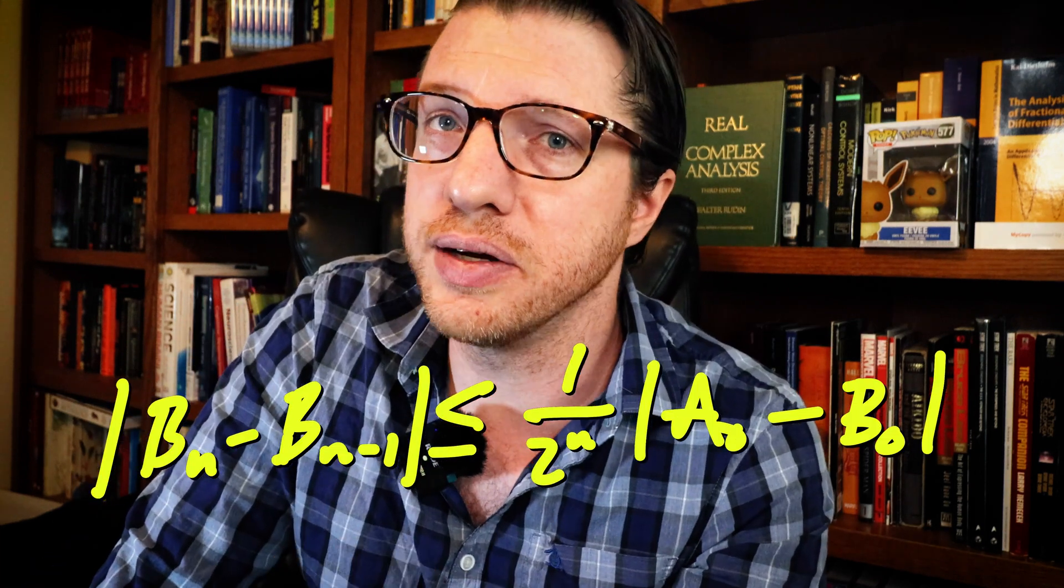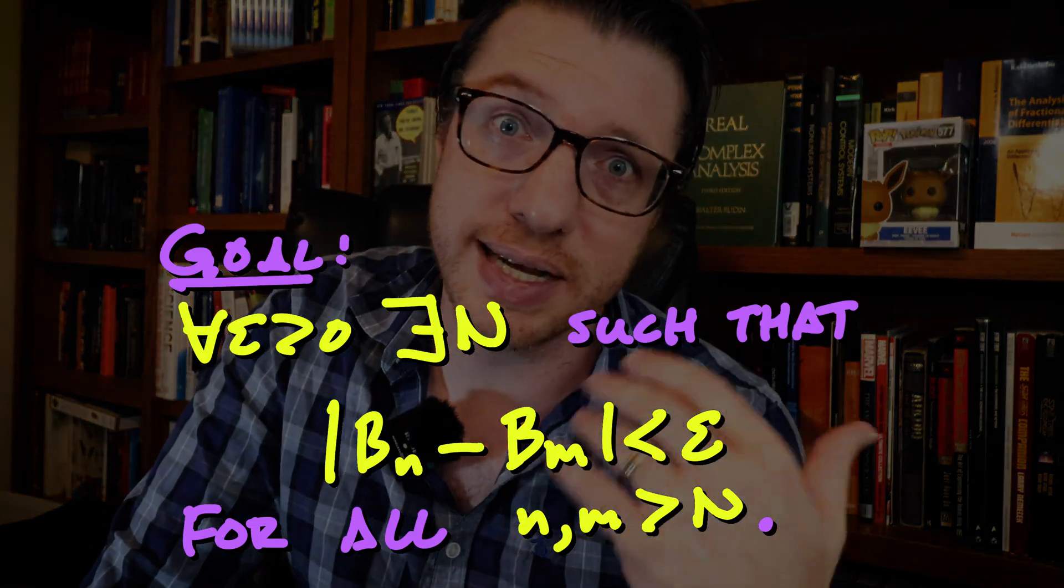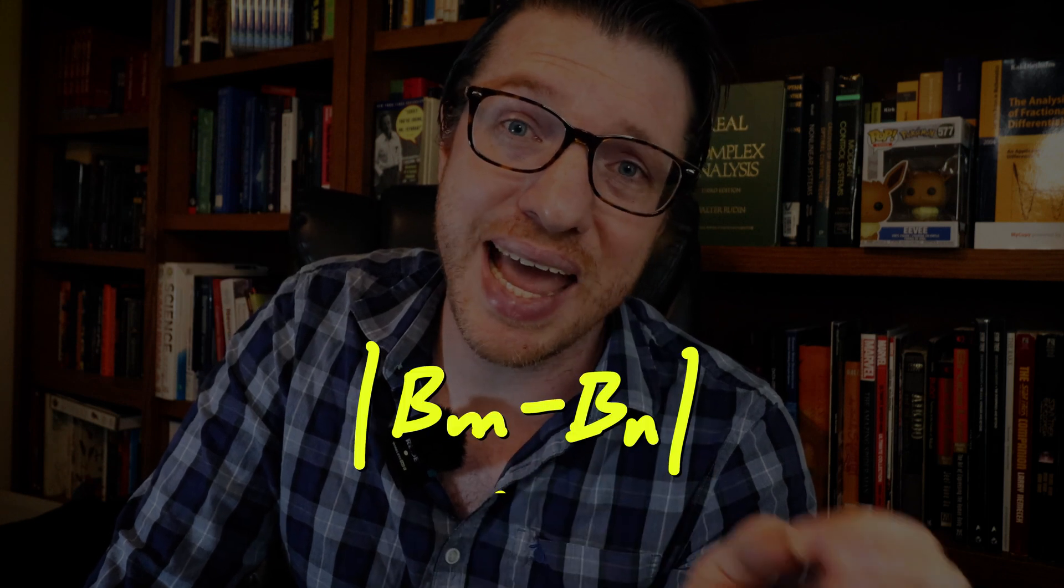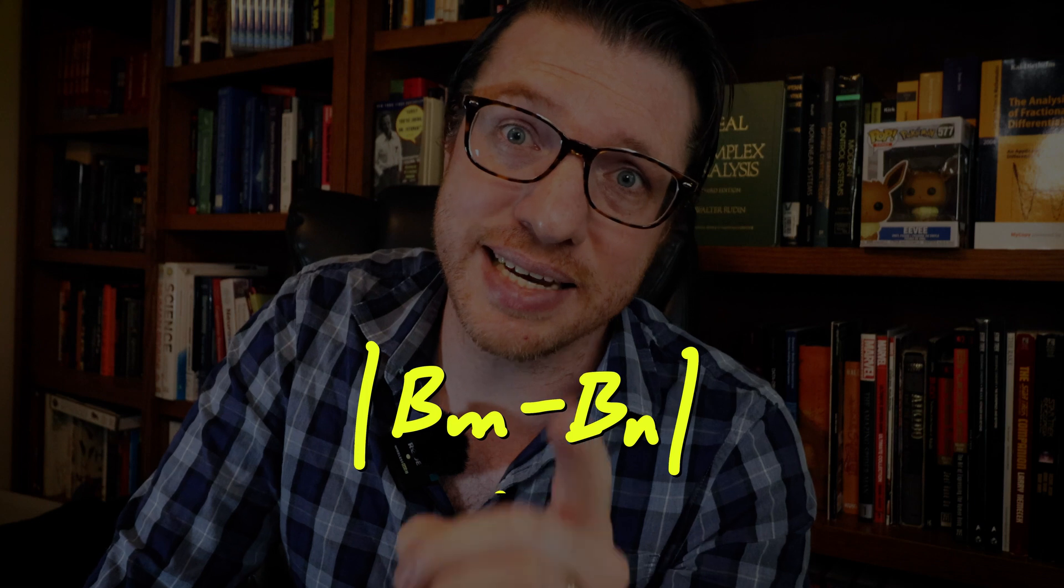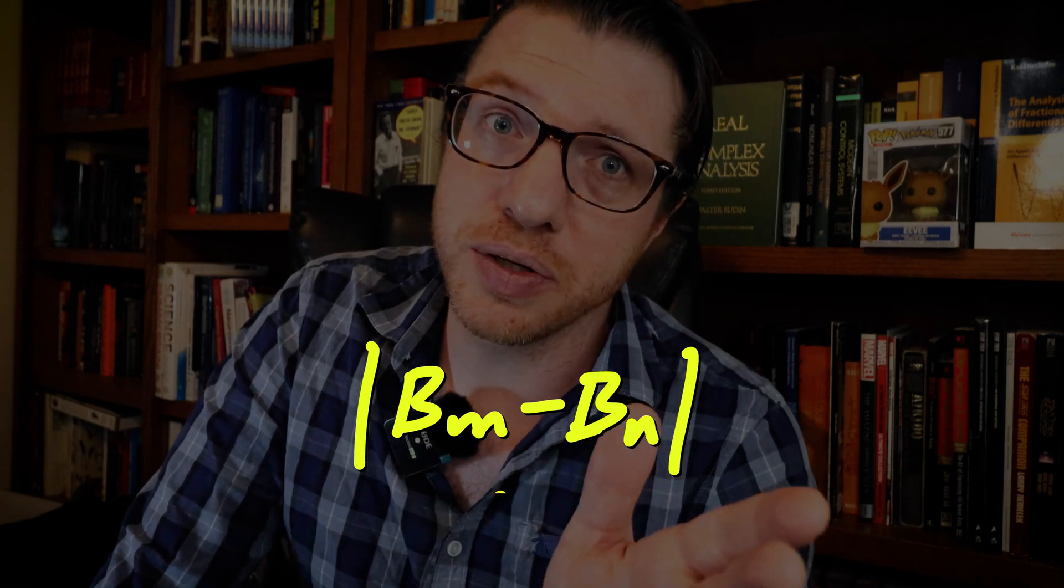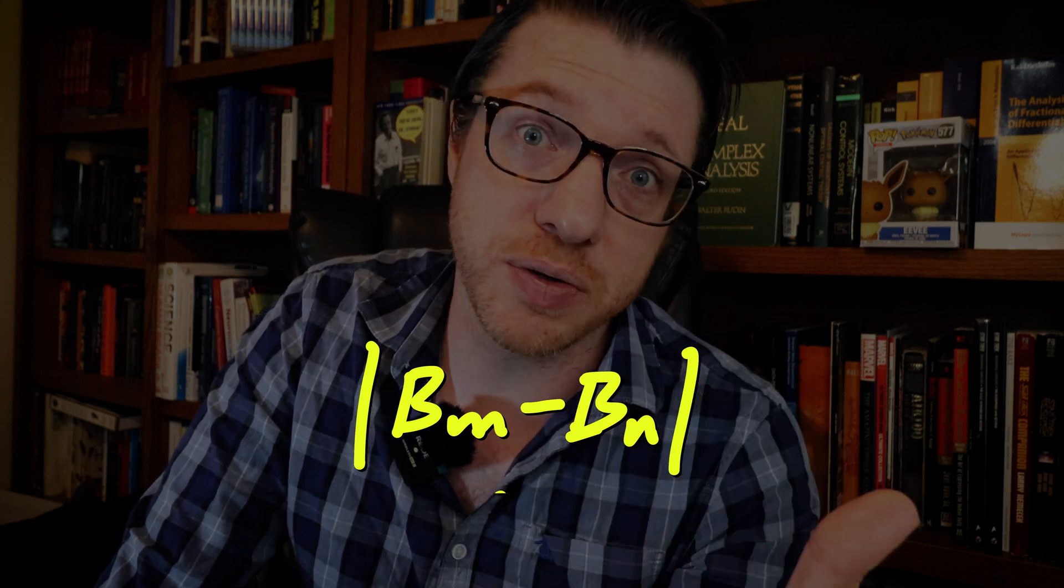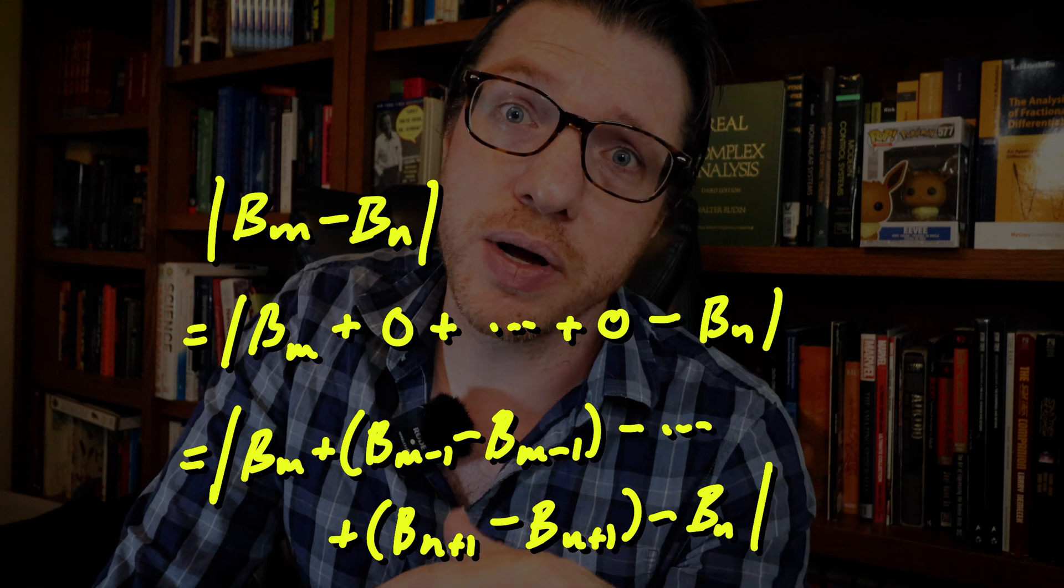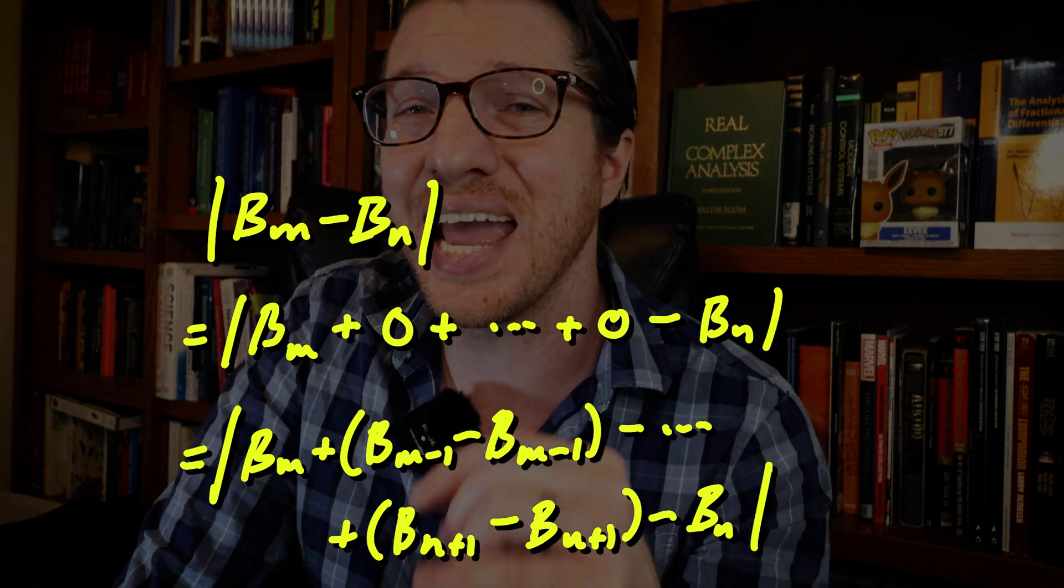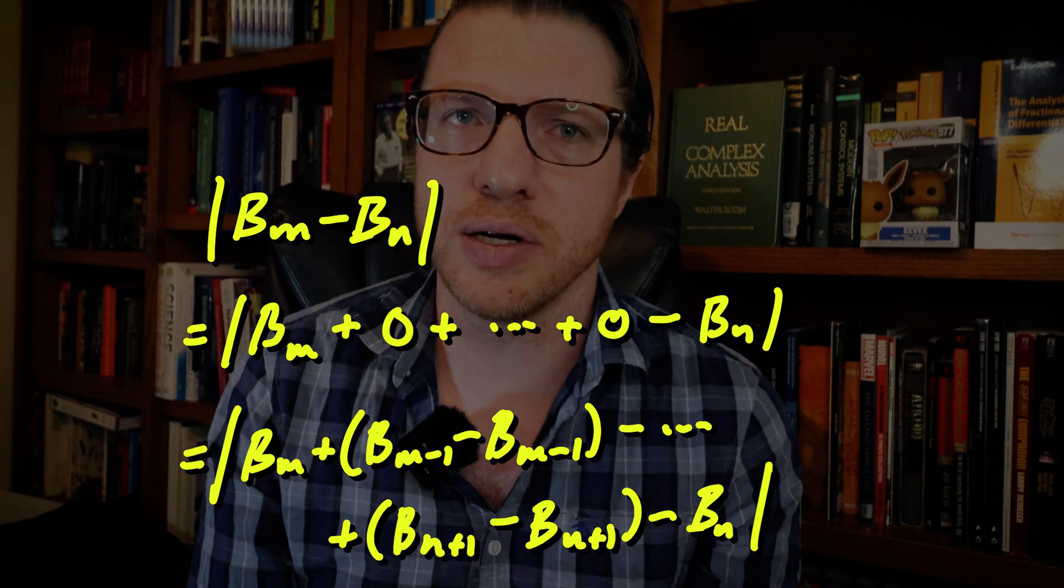Now, we are going to use that triangle inequality again. We want to show that this sequence is a Cauchy sequence. Before we select an epsilon, let's set the stage first by looking at the distance between bm and bn for two integers n and m. And we'll take m to be the larger of the two. We have a nice result already for consecutive terms. So, let's rewrite this difference by inserting a bunch of zeros in there. And for each zero, we're going to write it as the difference of one of our intermediate b terms and itself. Now we can group all of those together and split this distance using the triangle inequality.